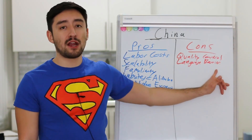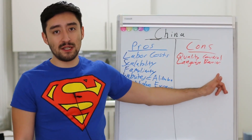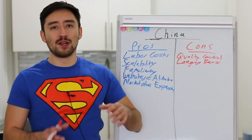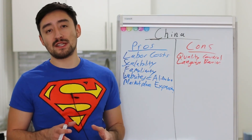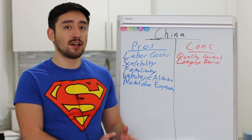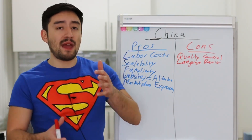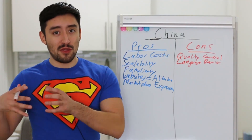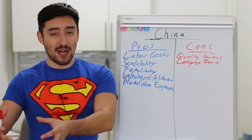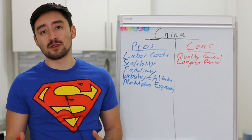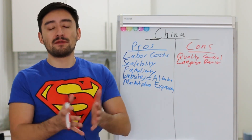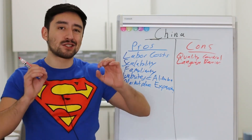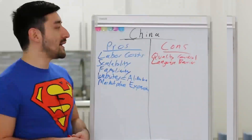The language barrier is real, and if you're serious about this product and business, you're going to want someone on your team who speaks Chinese — Mandarin or Cantonese — or you want to deal with people who are there in the country where you're outsourcing your product manufacturing, and have them communicate to make sure the factory actually understands what you're saying.